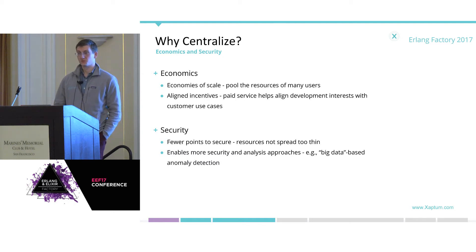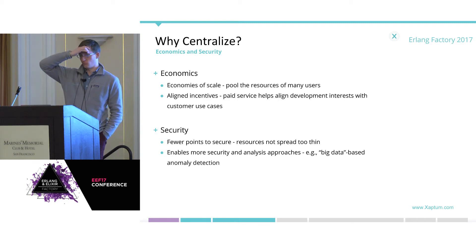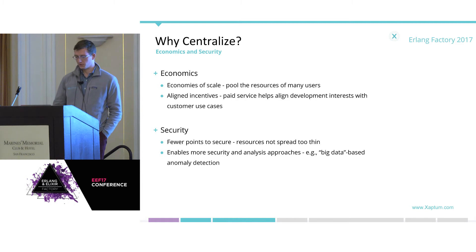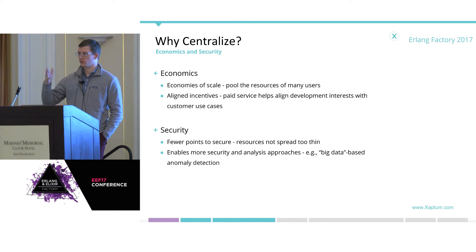On security: it's easier to secure a few points. When you distribute everything out to the device edge, you now have billions or trillions of devices to secure, and we've seen from recent attacks that that's certainly not working today. Centralization also enables more interesting analysis approaches for security. I think there's going to be a trend towards big data-based anomaly detection to detect threats in real time, rather than reactively detecting them and applying traditional firewall rules. If all the routing and computation is done at the edge, you don't have that big source of data to do that detection.